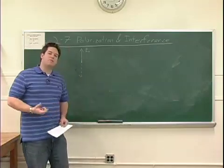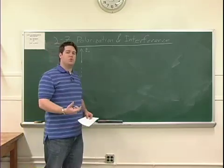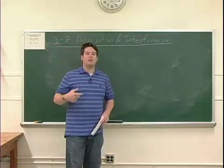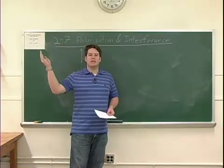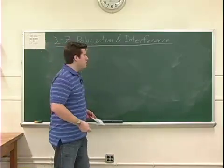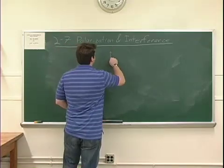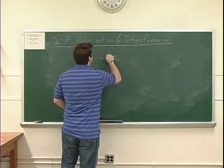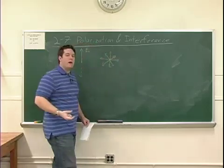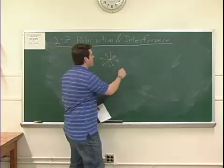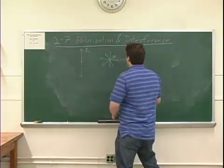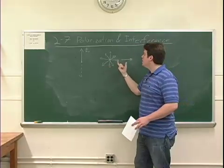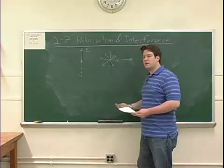We can also use something called a polarizer to choose what direction our light is polarized in. Most of the time, light that's generated by, say, incandescent lights or fluorescent lights is unpolarized. It has components of the electric field going in just about every direction in equal magnitudes. If we put this light through a polarizer, the polarizer will choose one direction for all of those electric field vectors to travel in.